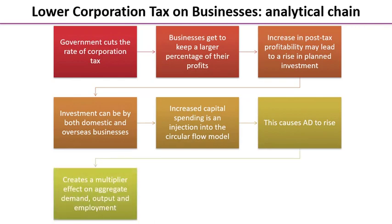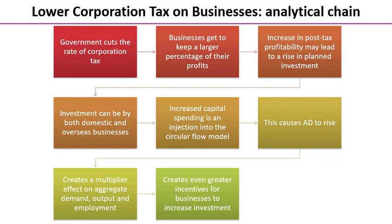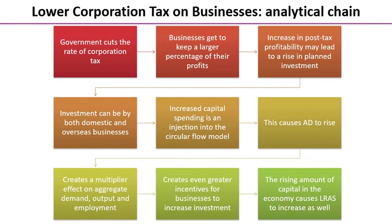This creates a multiplier effect on AD, output, and employment — if you were drawing a diagram, you might want to show a further additional shift of AD to the right. It also creates even greater incentives for businesses to increase investment, which could lead long-run aggregate supply to increase as well. We could tie that up by linking it to the impact on GDP, inflation, the price level, or employment — whatever the examiner has asked about.